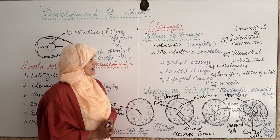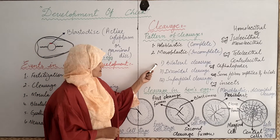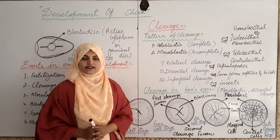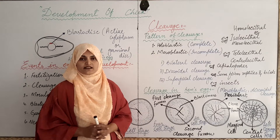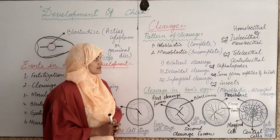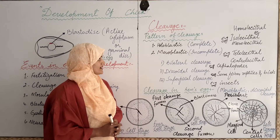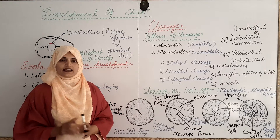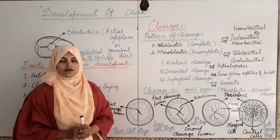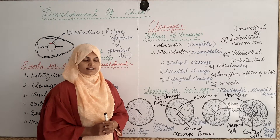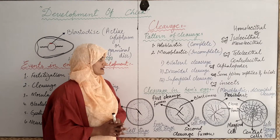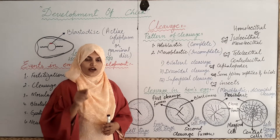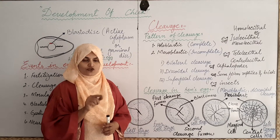Meroblastic cleavage is divided into three types: one is bilateral cleavage, second is discoidal cleavage, and third is superficial cleavage. Bilateral cleavage is the cleavage in which cleavage takes place bilaterally. Discoidal cleavage, the example of which is found in fishes, birds and reptiles, is the cleavage in which cleavage takes place in the disk of egg — that is, the blastodisk or germinal disk. While superficial cleavage is the cleavage that takes place on the surface of the egg only, while the main portion of the egg remains as it is.